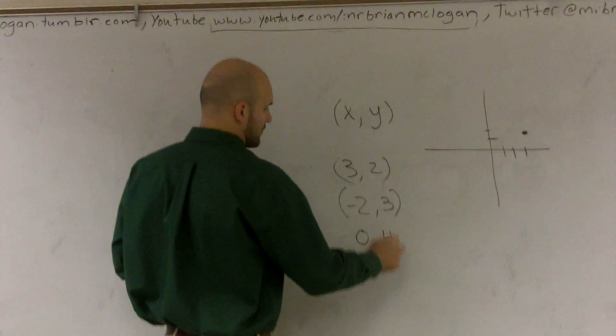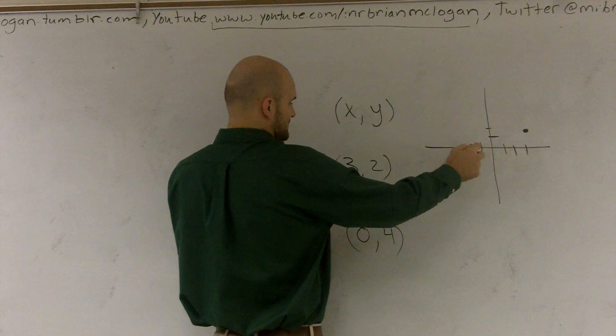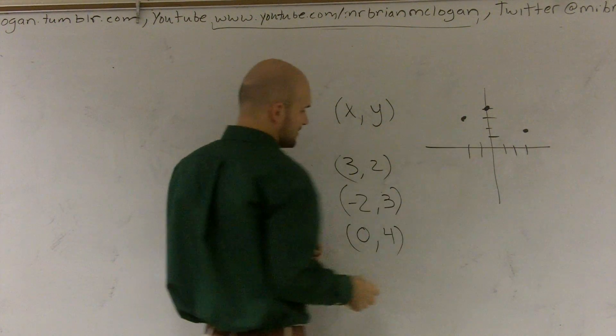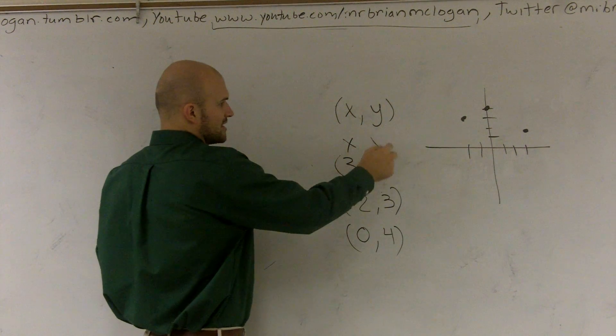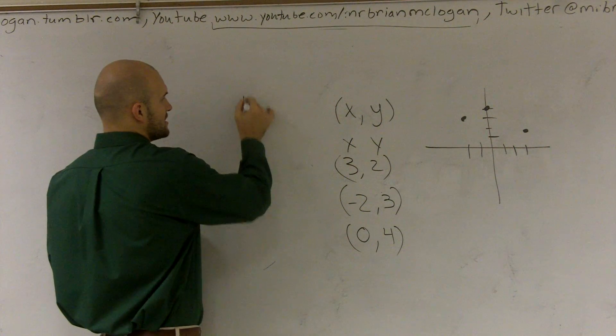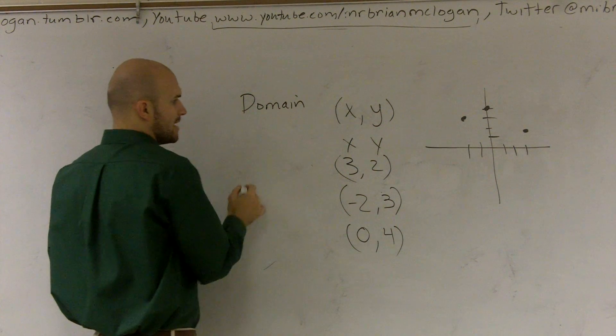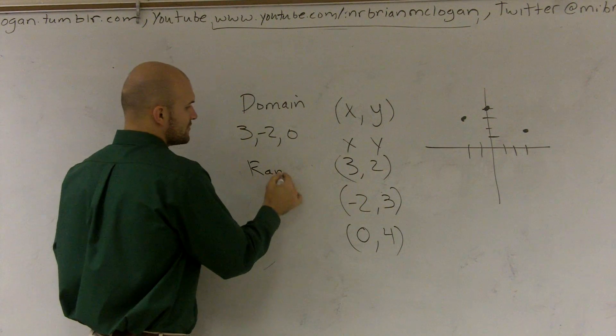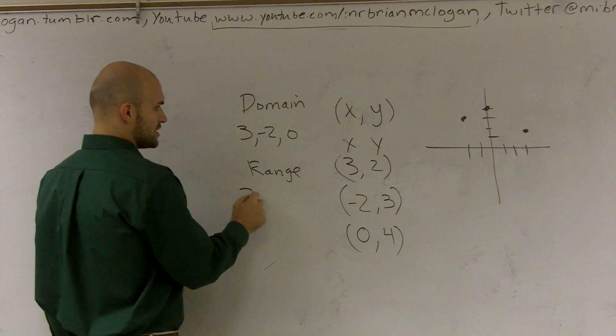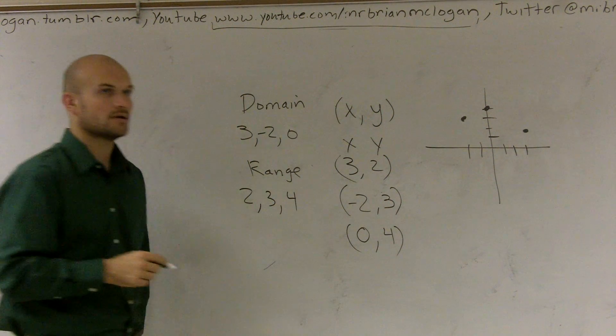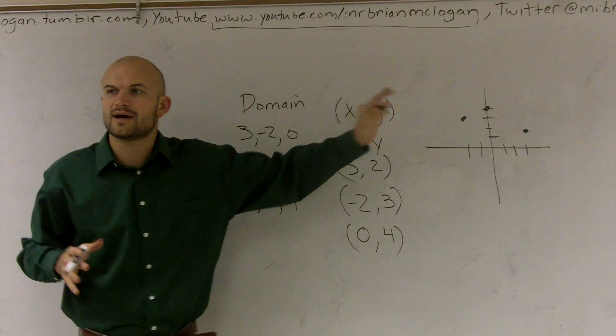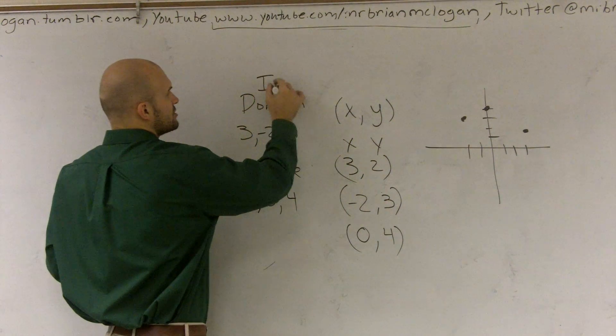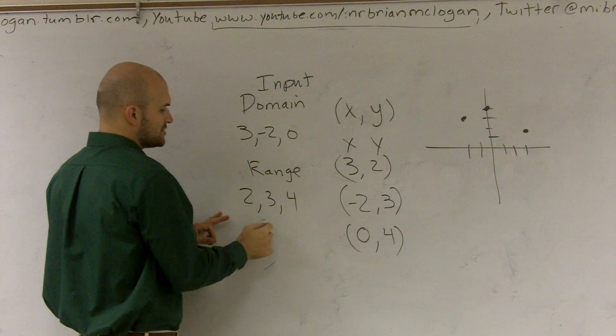Let's put up another couple of points. Let's put up 0 comma 4. So we said negative 2, 3, to be like right there, and 0, 4, right there. Well, remember, we said that these were all of our x values and these were all of our y's. We talked about domain was all your x values: 3, negative 2, and 0. And we said our range for this was all of our y values, which was 2, 3, and 4.